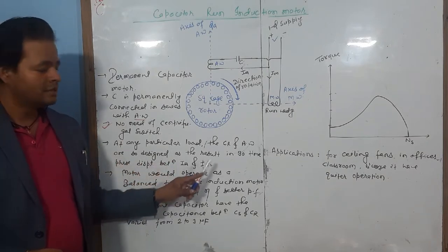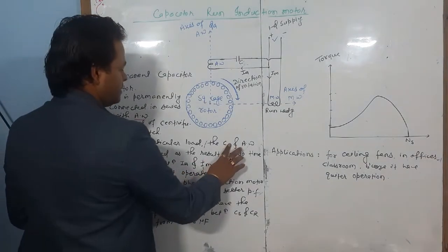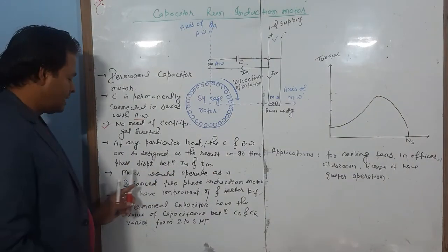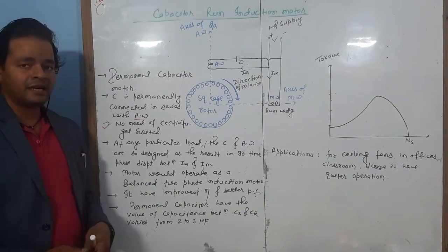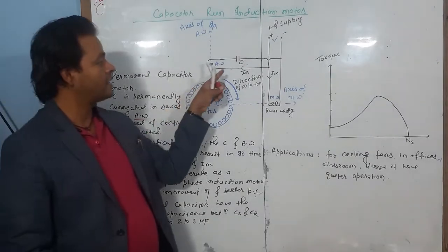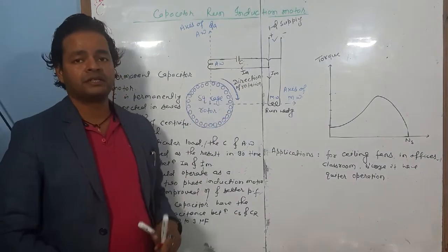At any particular load, the capacitor and auxiliary winding are designed to result in 90-degree time phase displacement between Ia and Im. In this case, the starting torque is mainly due to the auxiliary winding.